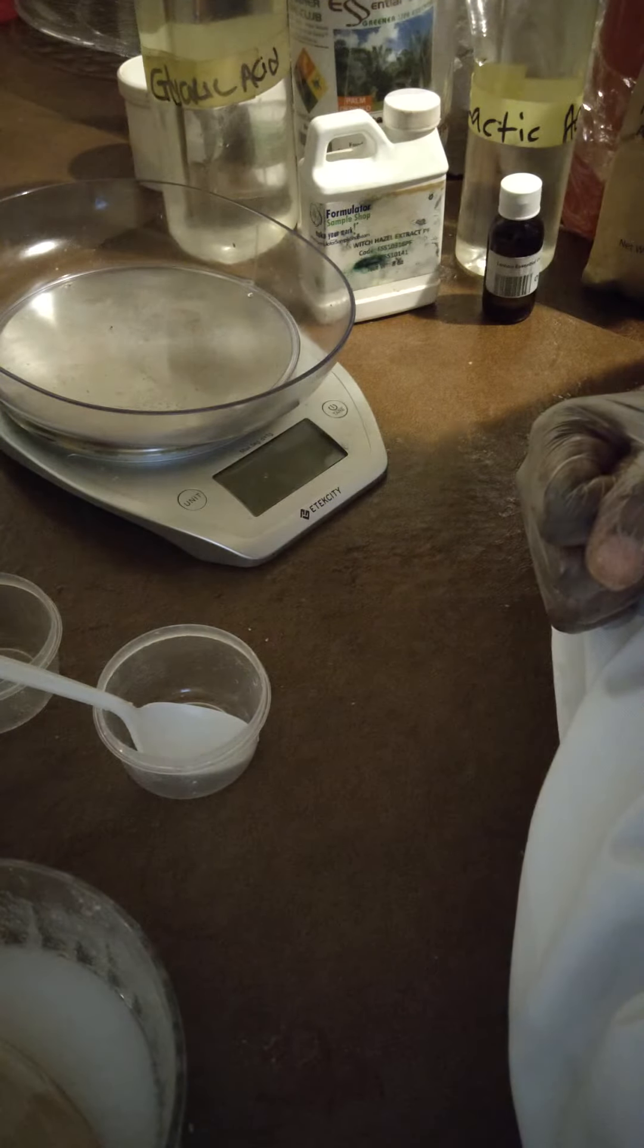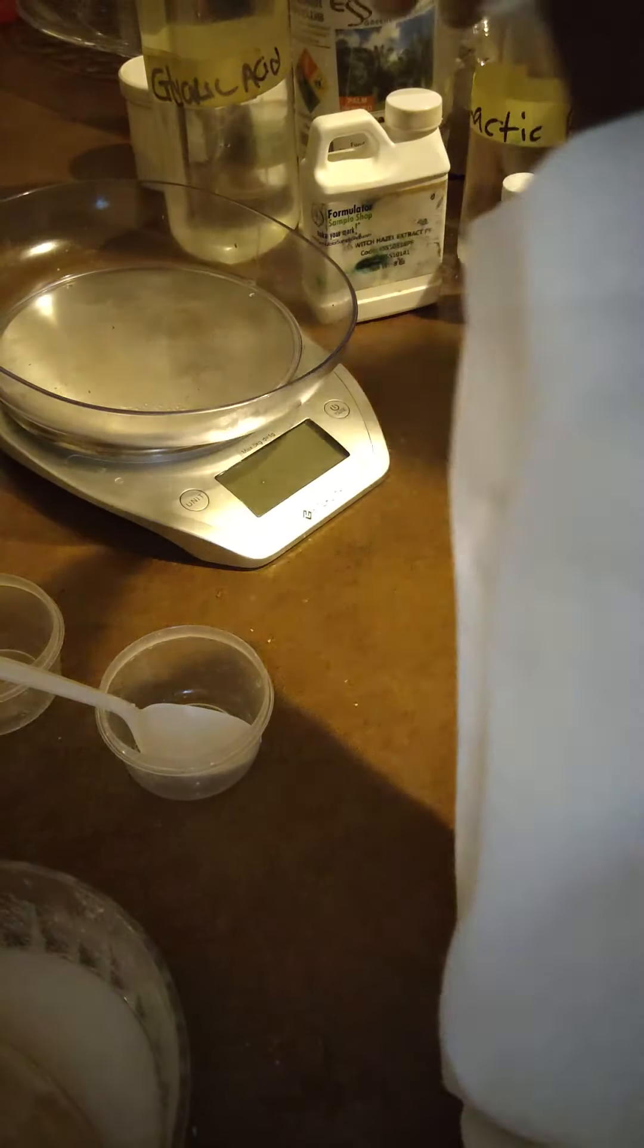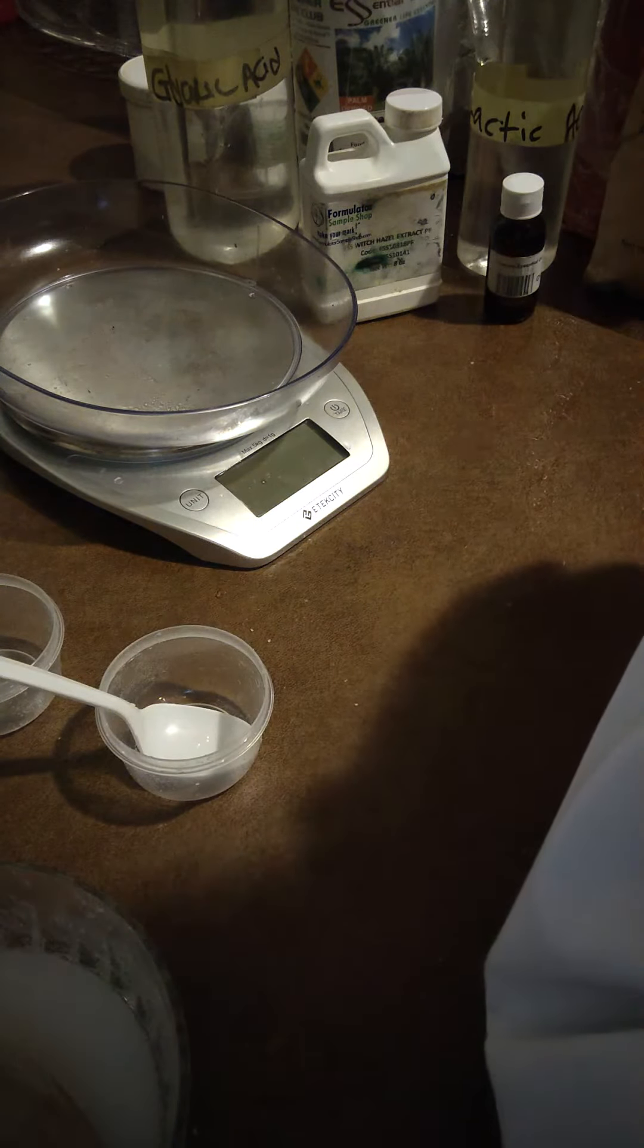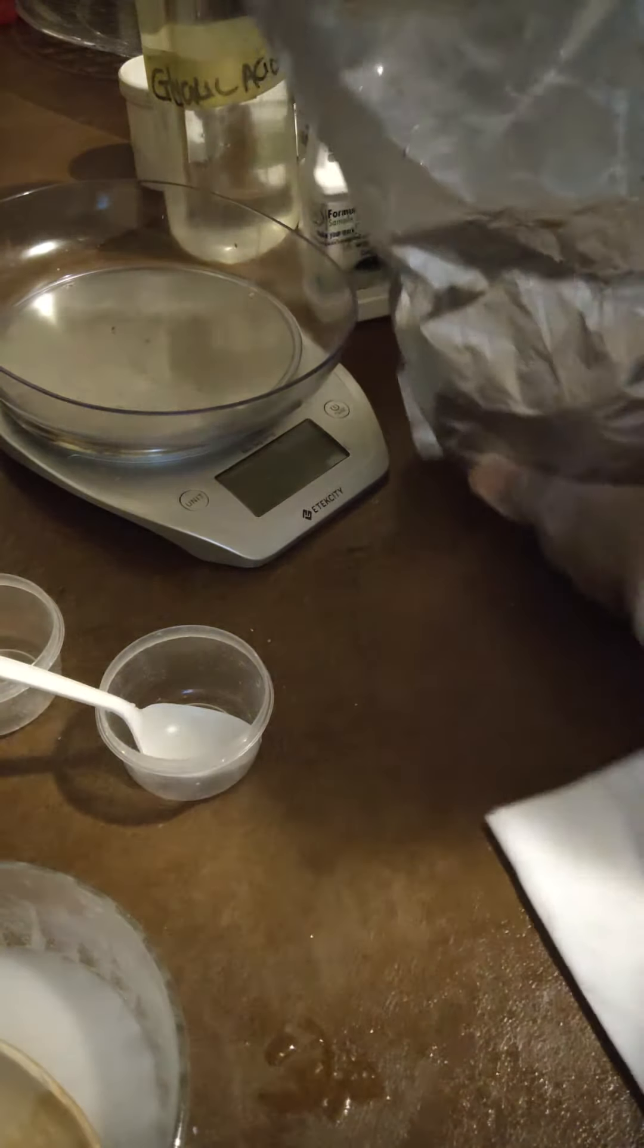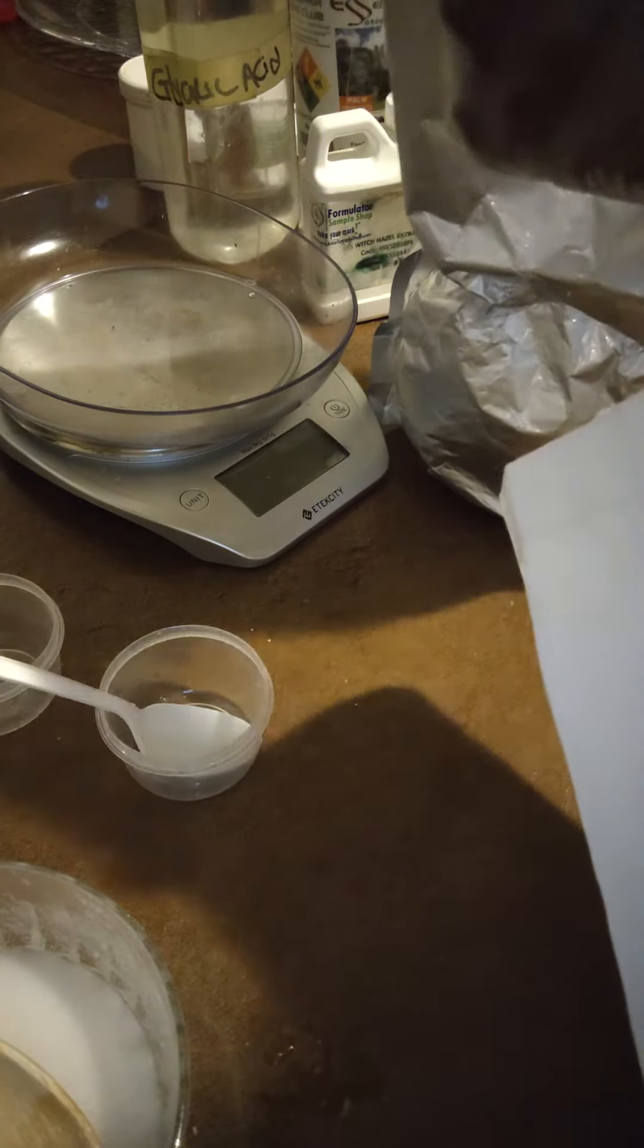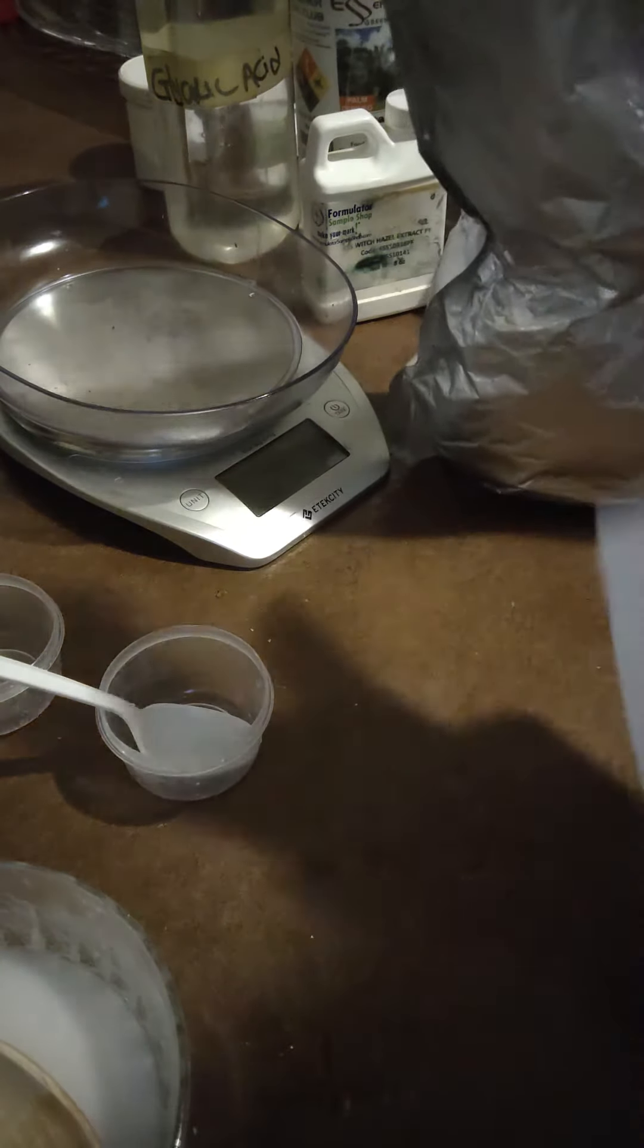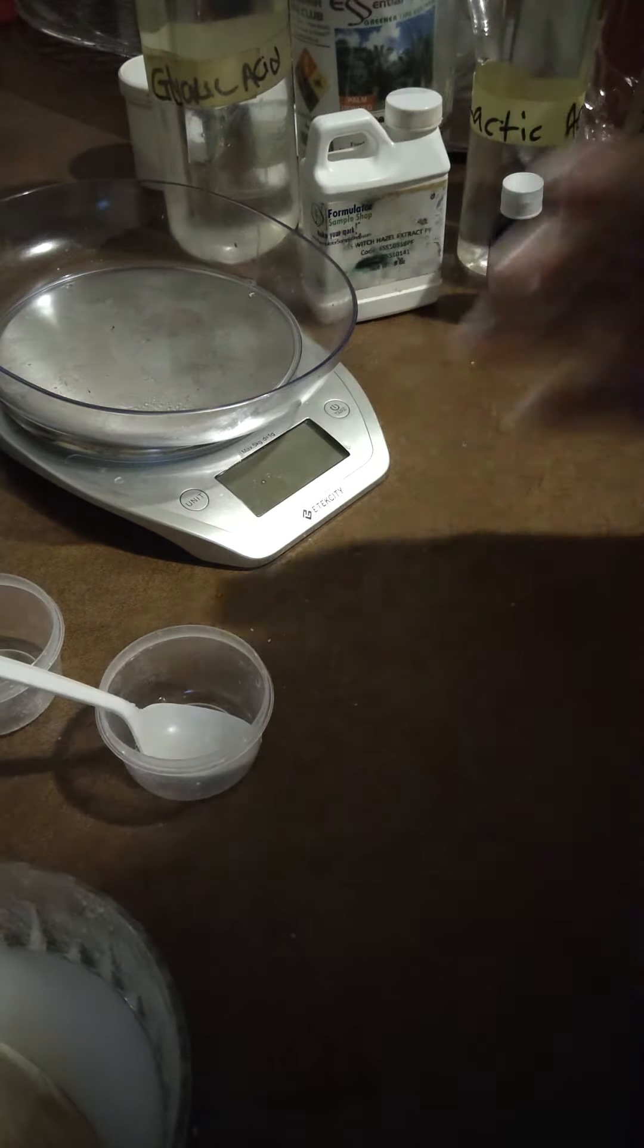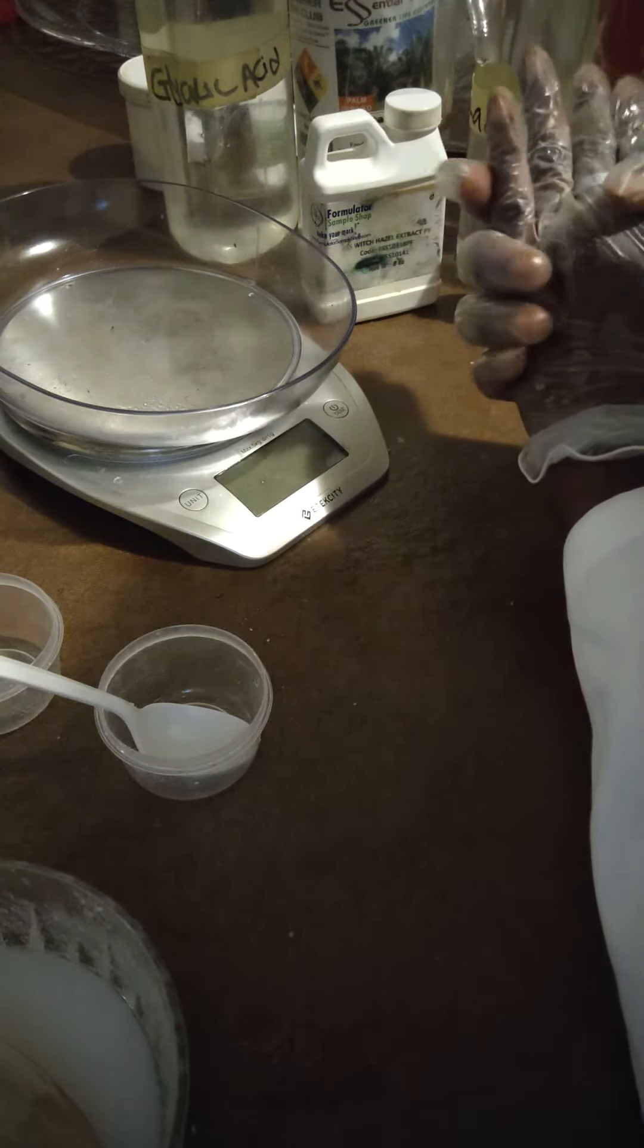BHA acids such as salicylic acid are used to penetrate the dermal layer, while the AHA acids penetrate the epidermal layer or the top layer of the skin.